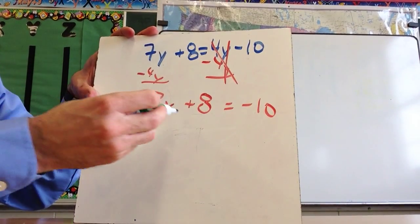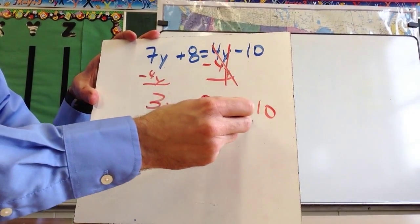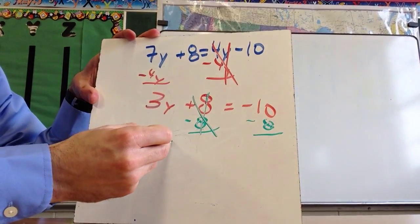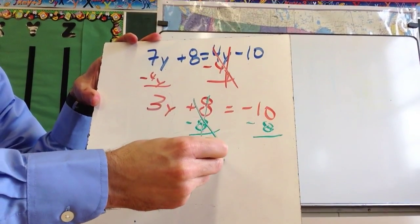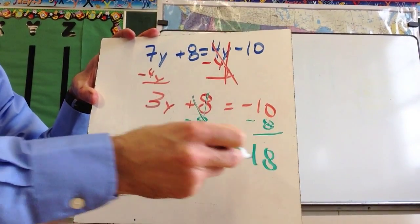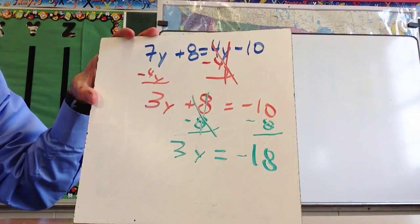Now what I'm going to do is, now I would subtract the 8. This is going to go away. And I've got 3y, be careful, that's not negative 2. Negative 10 minus 8 is negative 18.